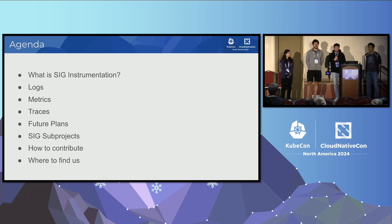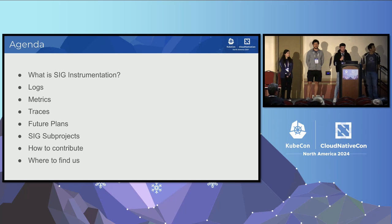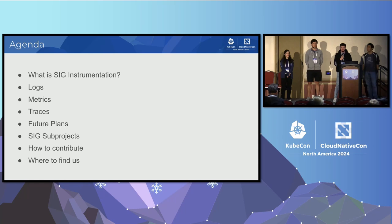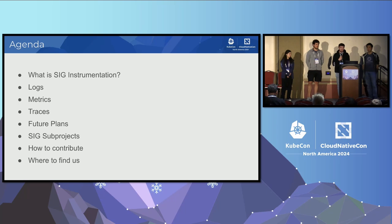You will learn about the three big observability signals that we are responsible for in Kubernetes and the ecosystem. We will also talk about our future plans, the sub-projects that we develop on a continuous basis. And we will also tell you how to contribute and where you can find our sub-projects.